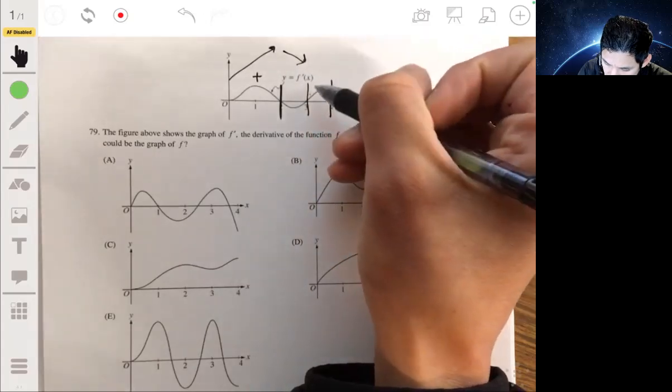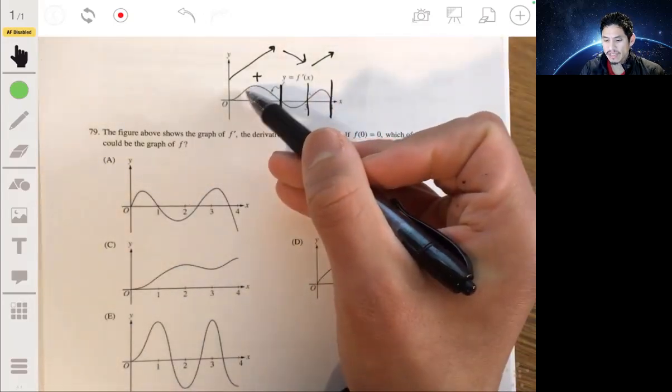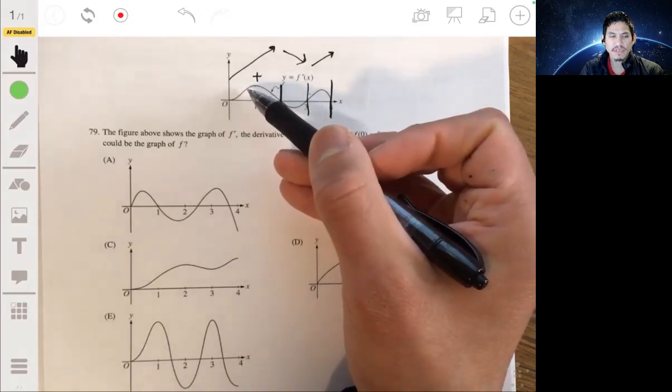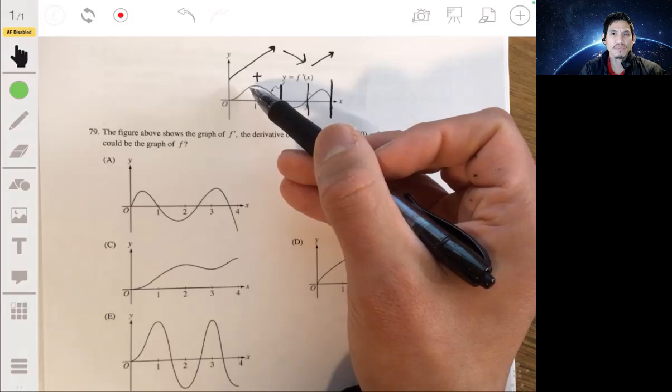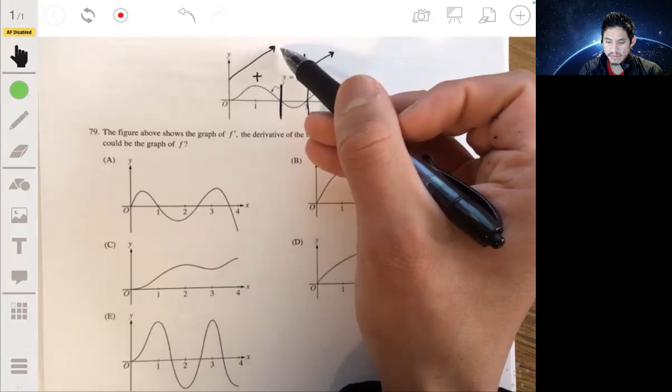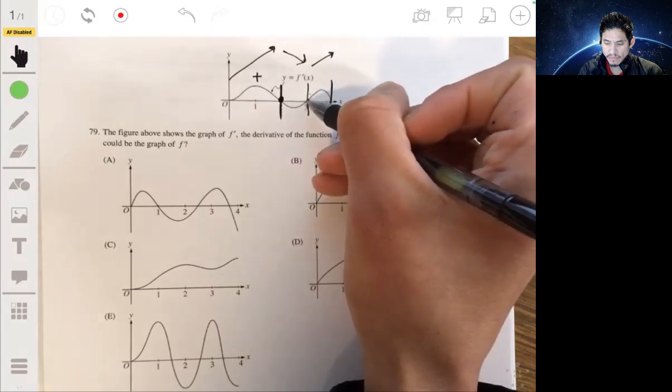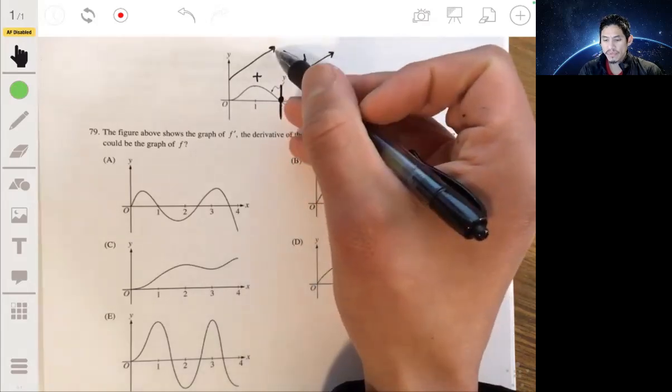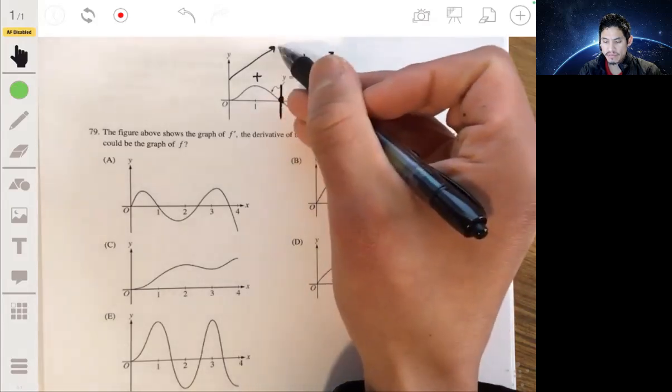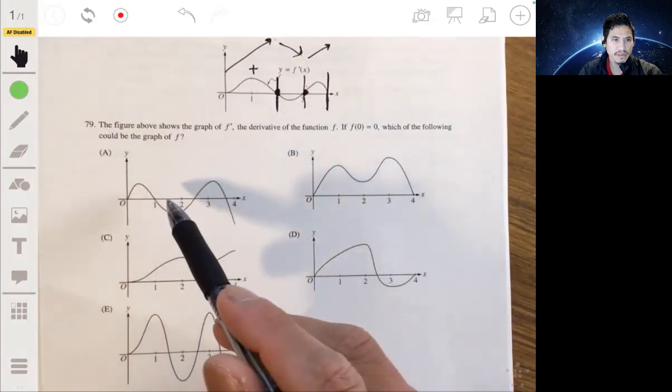Here it's above again so it's going up. We don't care that we have a max here, it doesn't mean the function is going to decrease, just means the rate of decrease is different. We want to see a function that has a relative max here and a relative min here. It goes up, then it goes down, and goes up again. Let's see what we can eliminate.